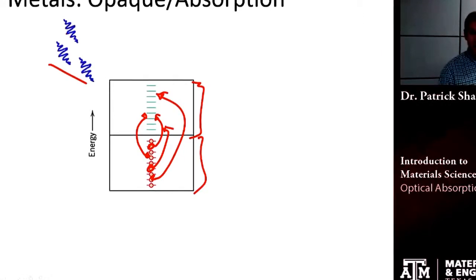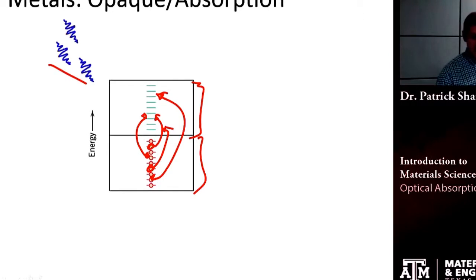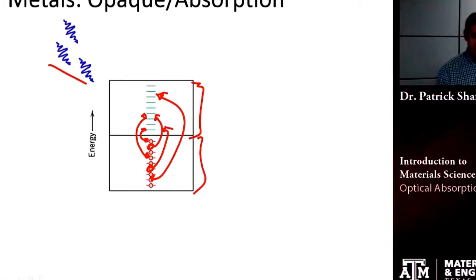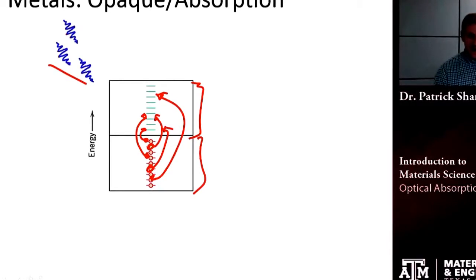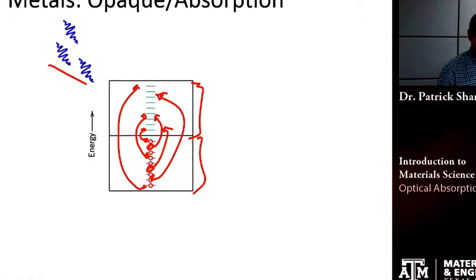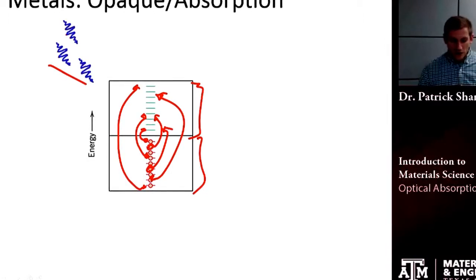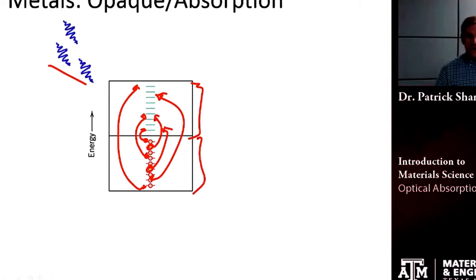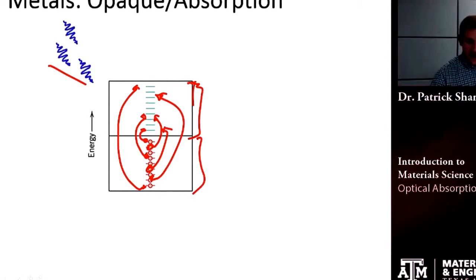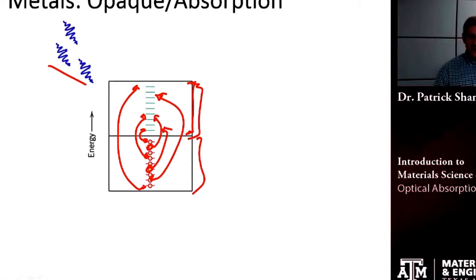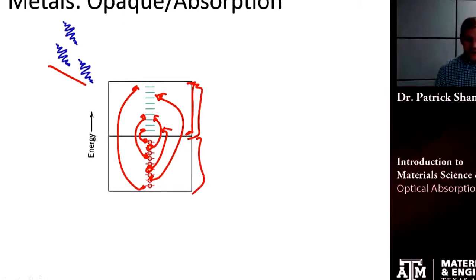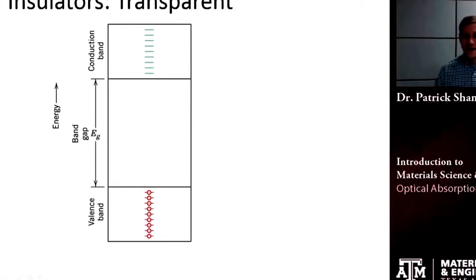So if I have long wavelengths, small energies, I can still absorb them. If I have short wavelengths, high energy photons, I can absorb those as well. Metals are absorptive to light because they have all of these potential places that I can kick that electron up to, allowing it to absorb light at that particular wavelength.